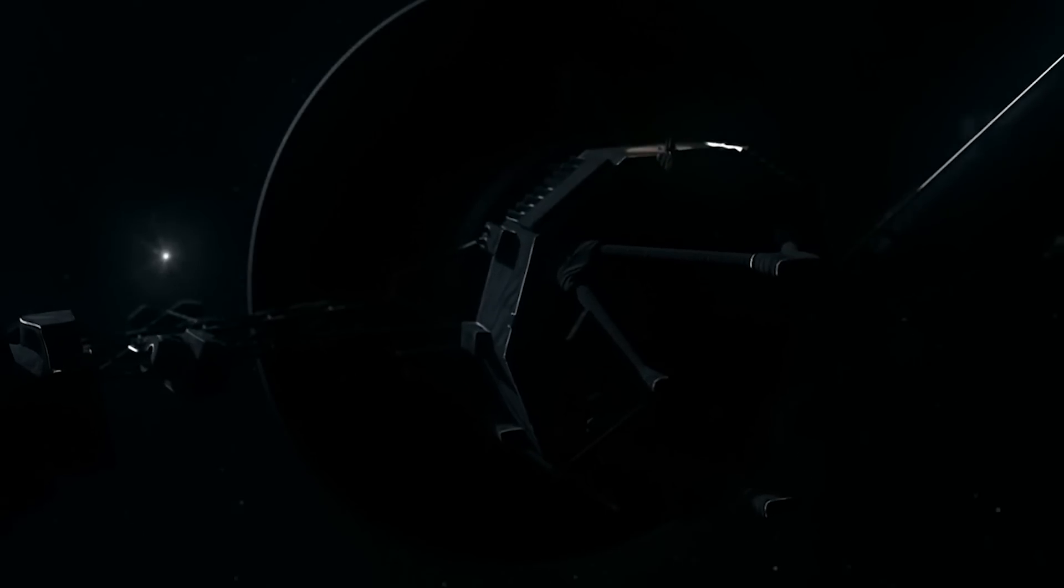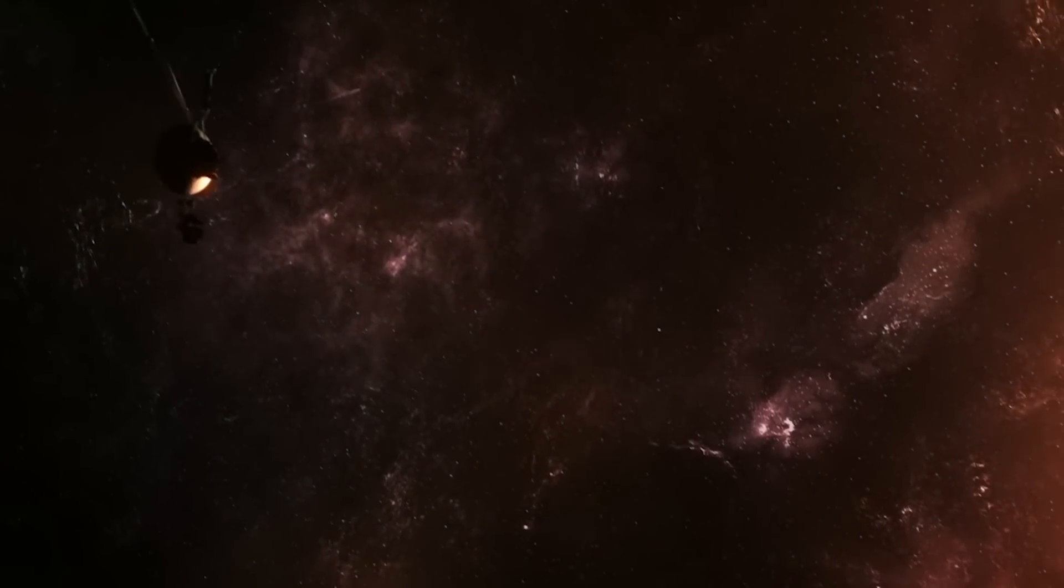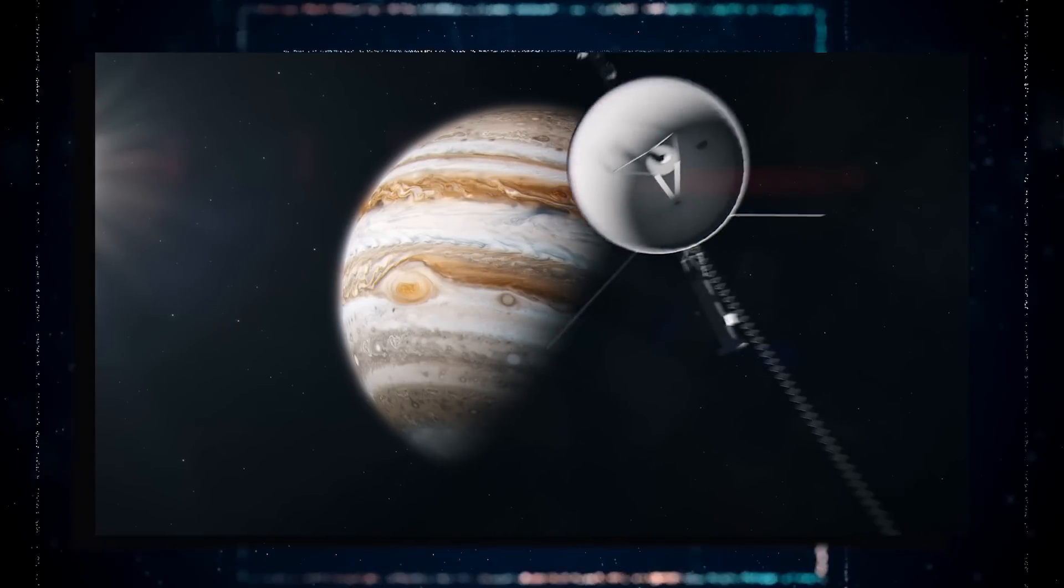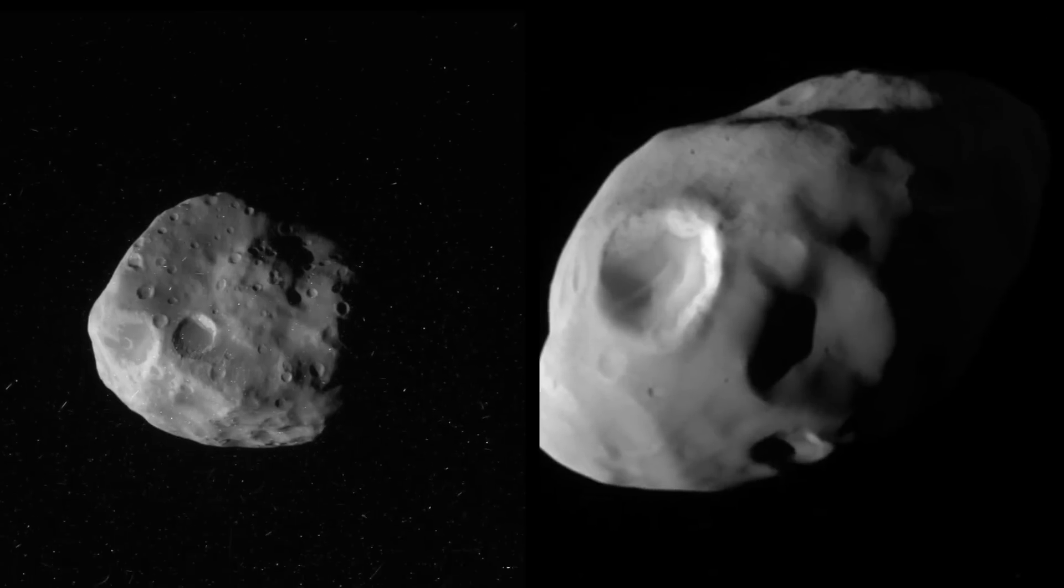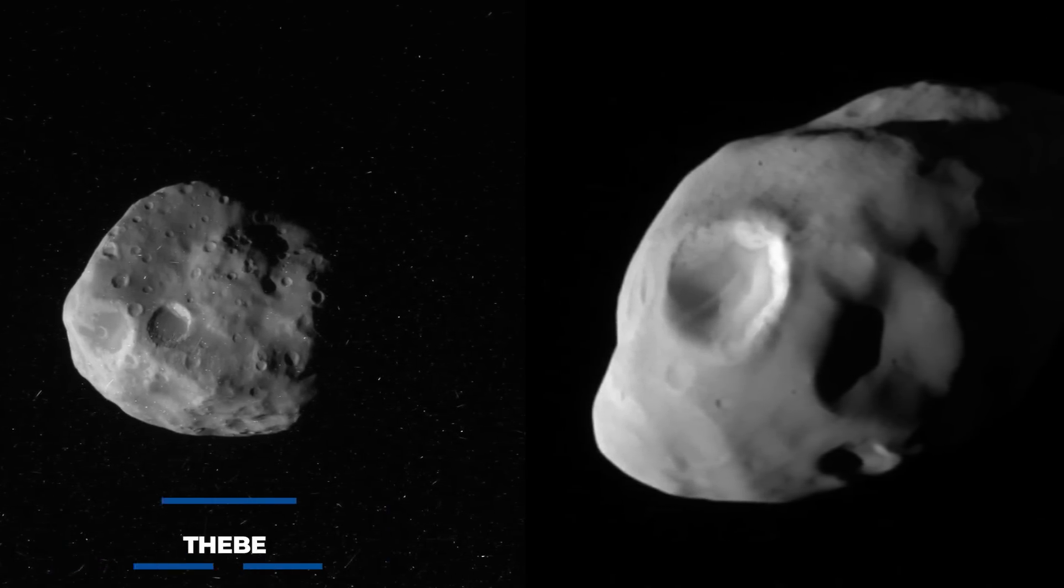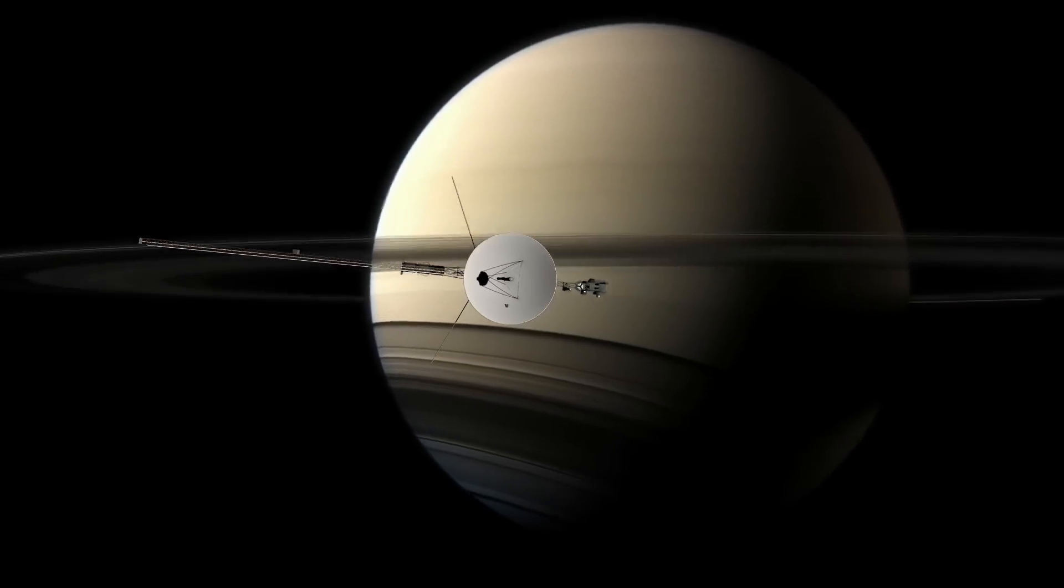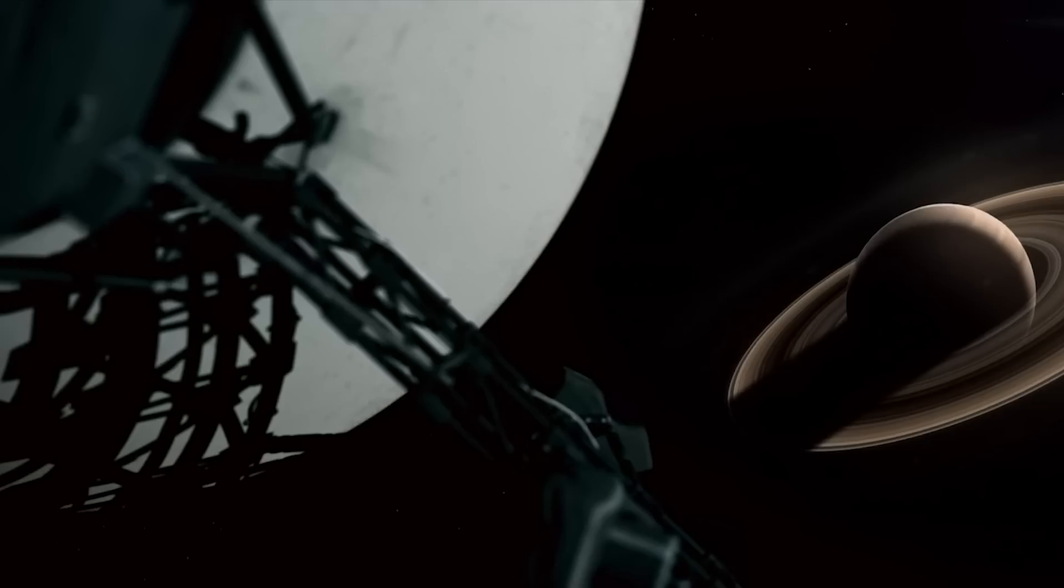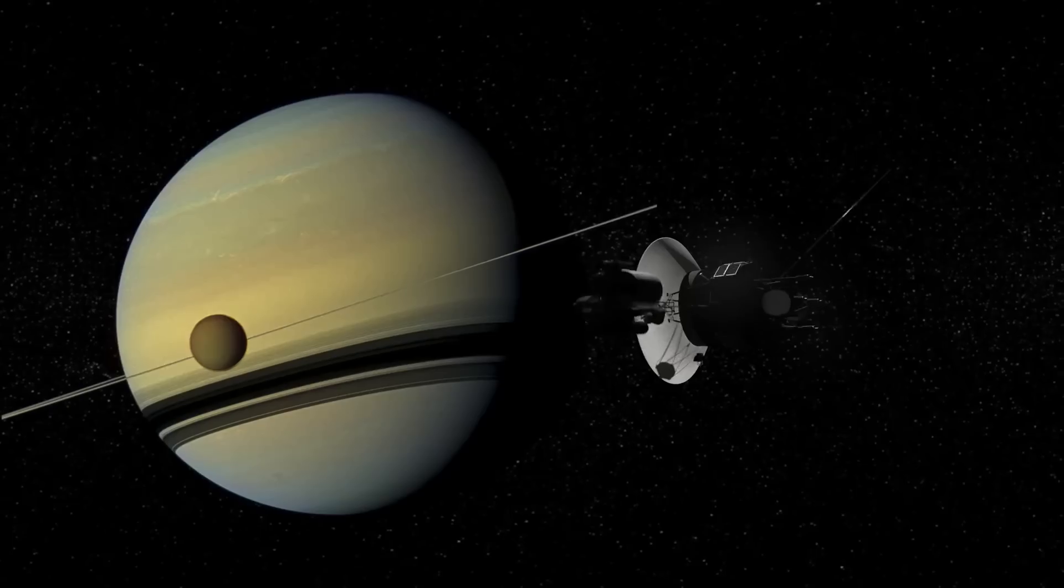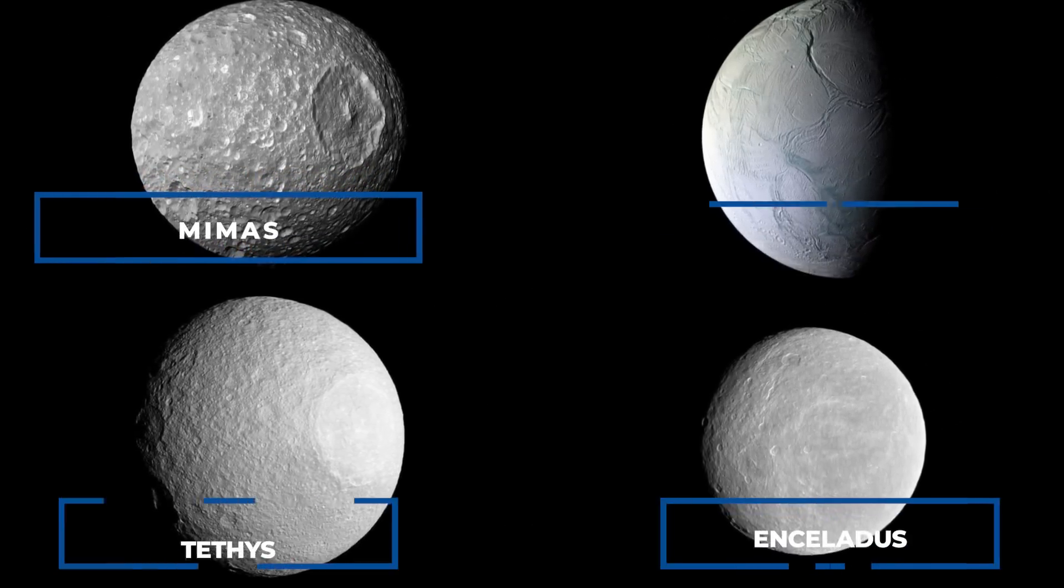The Voyager 1 spacecraft's incredible journey into the unknown regions of the cosmos led to some fascinating discoveries. After exploring Jupiter and its moons, Voyager 1 moved on to Saturn, where it made an extraordinary discovery of two new moons named Thebe and Metis. To ensure a safe flyby of Saturn and prevent a potential collision with Titan, scientists made corrective maneuvers. Voyager 1 continued to explore Saturn's orbit and discovered four more moons, including Mimas, Enceladus, Tethys, and Rhea.